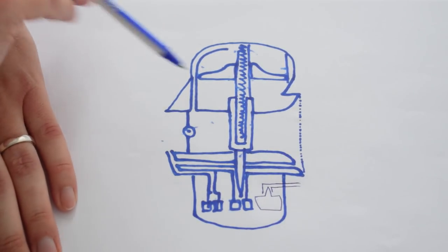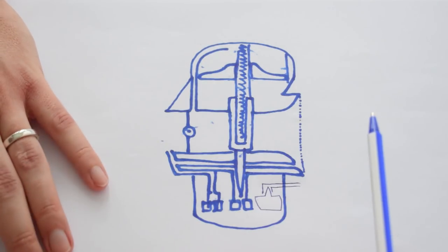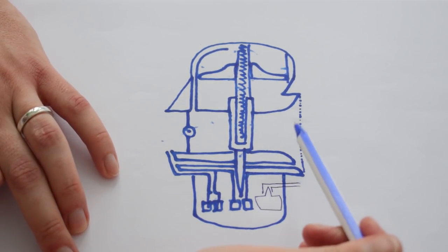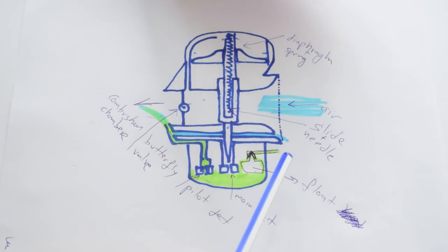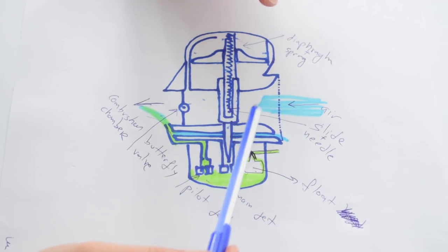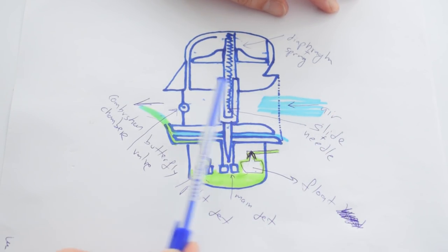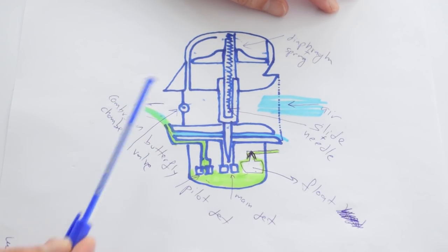Now this may look a bit complicated but don't worry, it is again pretty simple and all the same principles apply to the CV carburettor as well. So here we have all the main parts of our CV carburettor. Our air comes in from this side and our combustion chambers are on this side.